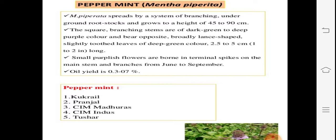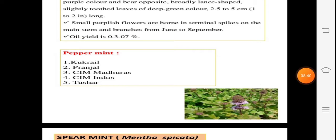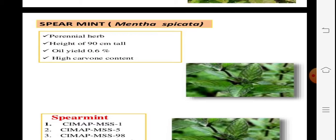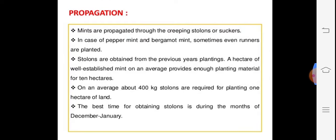Peppermint, Mentha piperita, grows up to 90 cm (approximately 3 feet). Leaves are dark green and opposite. Its varieties include Kukrail, Pranjal, CIM Maduras, CIM Indus, and Tushar. Spearmint, Mentha spicata, is a perennial herb growing to 90 cm with 0.6% oil content, showing a characteristic dark green color.